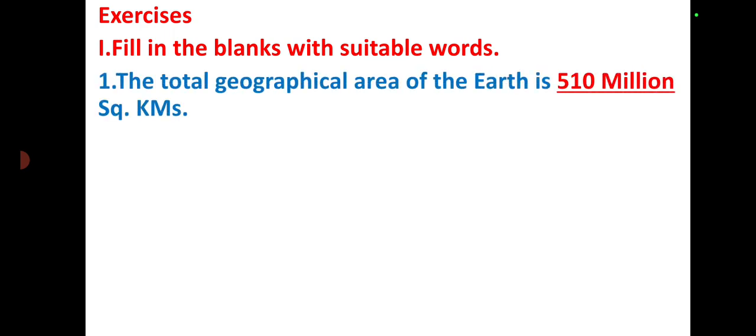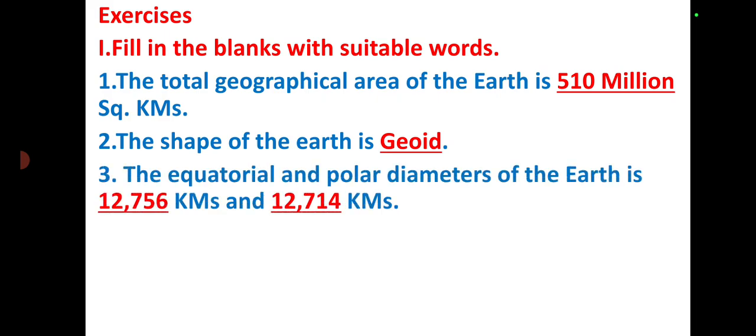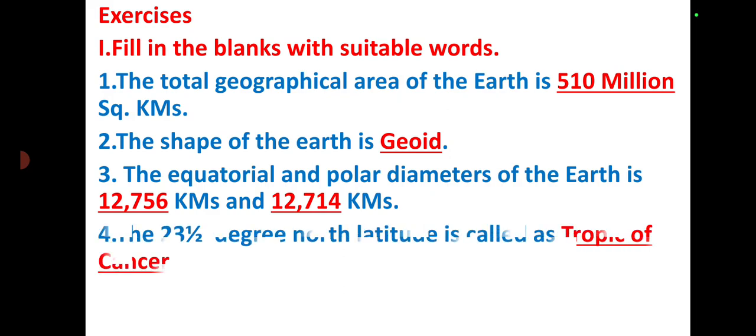First question: Fill in the blanks with suitable words. The total geographical area of the Earth is 510 million square kilometers. The shape of the Earth is geoid. The equatorial and polar diameters of the Earth are 12,756 kilometers and 12,714 kilometers. The 23½ degree north latitude is called the Tropic of Cancer.